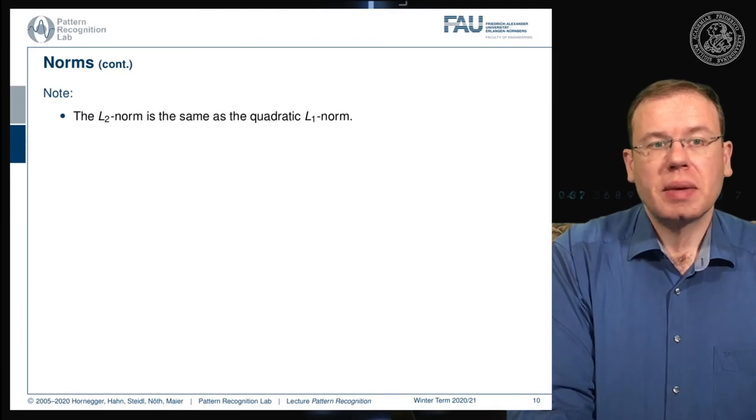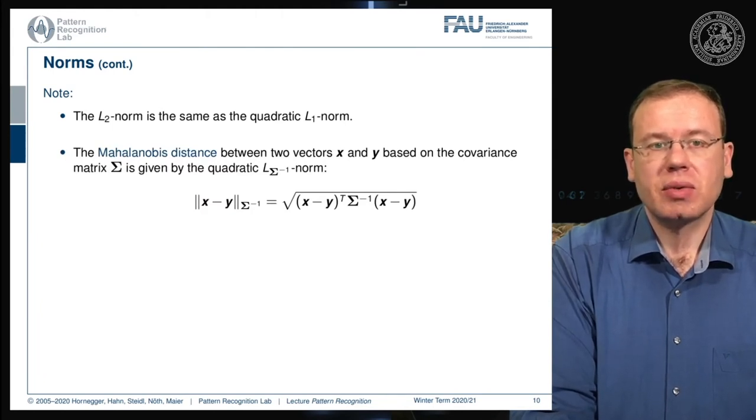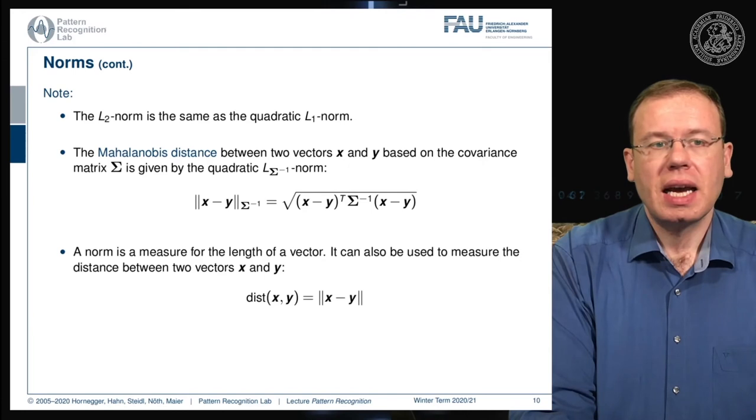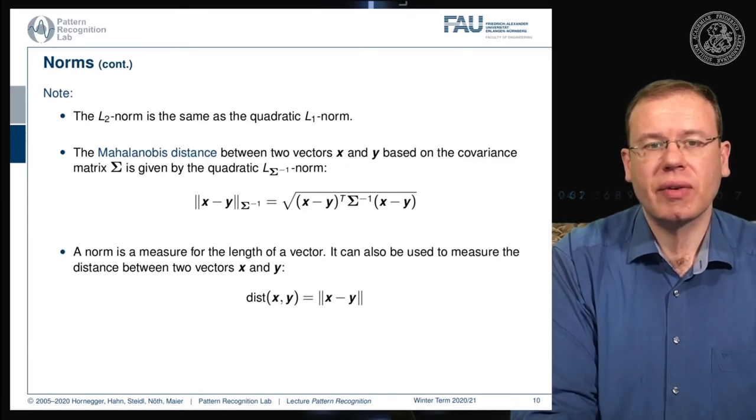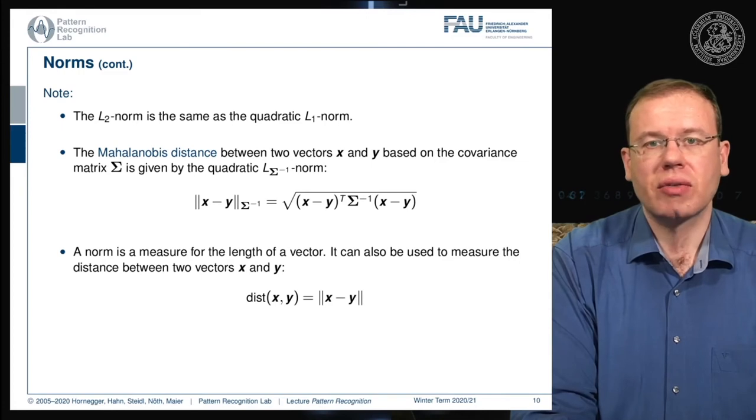The L2 norm is the same as the quadratic L identity norm. You can write the Mahalanobis distance between two vectors using the inverse covariance matrix—the quadratic L Σ inverse norm. This is essentially a kind of LP norm with the inverse covariance matrix as the scaling. Generally, a norm measures the length of a vector and can measure the distance between two vectors x and y. Depending on the norm you're taking, you're taking a particular interpretation of the distance.